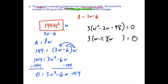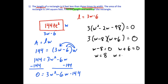For the quadratic inside, we need two numbers with a product of negative 48 and a sum of negative 2. Those numbers are negative 8 and positive 6. We don't set the constant 3 equal to zero — that's nonsensical — so we set W minus 8 and W plus 6 equal to zero, giving W equals 8 or W equals negative 6. Since we can't have negative dimensions, we reject W equals negative 6.